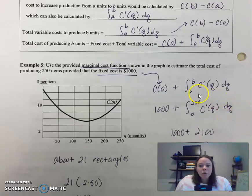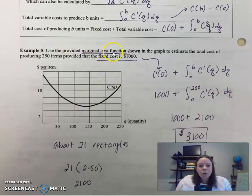So use the provided marginal cost function shown in the graph to estimate the total cost of producing 250 items provided the fixed cost is a thousand. So there's your fixed cost. There's your 1000 plus the definite integral from zero to 250 of c prime of q dq or marginal cost. That's what that is.